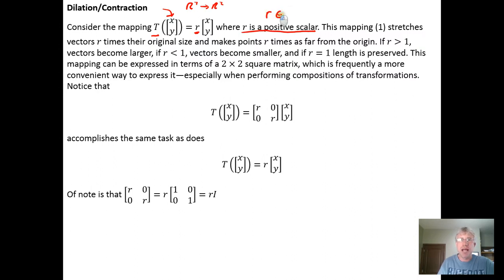In other words, an element of R positive, so positive real numbers. If R is a number that's bigger than 1, we get a dilation. The vector becomes R times longer than it was initially, or it stretches.